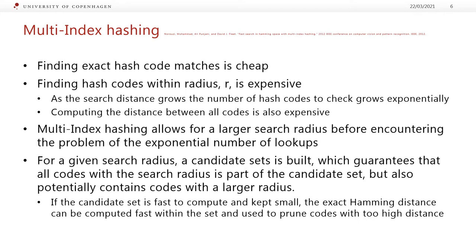We know that finding exact hash code matches is very cheap, as we can just use the hash code as an index to look up and see if there's anything that matches. But finding hash codes within a given radius is expensive, because it requires us to either compute the distance between all codes and the query, or do a permutation of the codes — making a lookup for each permutation within the radius, which grows exponentially with the search radius.